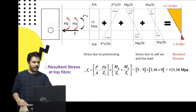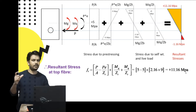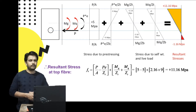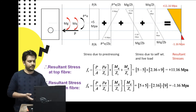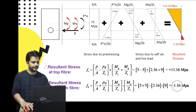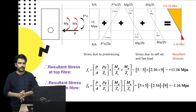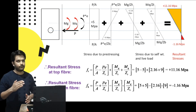Resultant stress at service — top fiber: 5 - 5 + 2.16 + 9 = +11.16 MPa (compressive), increased from 2.16 MPa at transfer due to the addition of live load. Bottom fiber: 5 + 5 - 2.16 - 9 = -1.16 MPa (tensile). So at the service stage, the bottom-most fiber is subjected to tensile stress. This demonstrates the key difference between the stage of transfer and the stage of service.